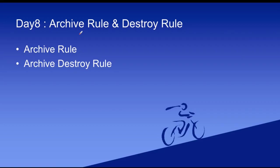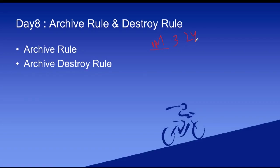Similarly in ServiceNow records we can archive. Let's say in the incident table we have 1 million records and it is very hard to open the incident table because there is huge data. For that reason we can archive specific records — let's say 3-month-old or 6-month-old data. Normally people archive 2 or 3 years old data. Those archived records go to another table called the archive table where that data is stored.